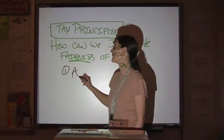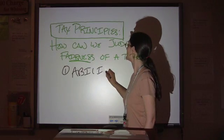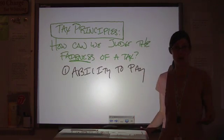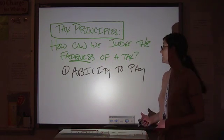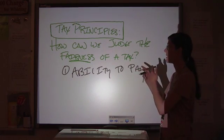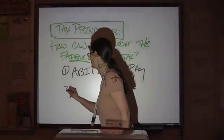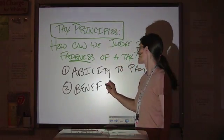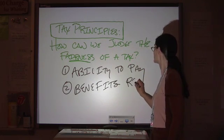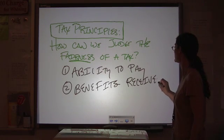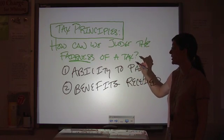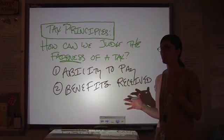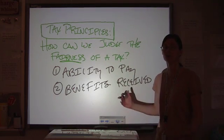The first one is ability to pay. In other words, if you're able to pay a tax, if it's not burdensome to you, then it's probably not going to be that big of a deal. You have to combine that with the second principle, which for most people is going to be a lot more important. And that one is benefits received. Now, if you're paying a tax, but you're not getting any benefit from the tax, then that gives you a little bit more of a basis for saying, hey, that tax is unfair, than if you just don't want to pay it.